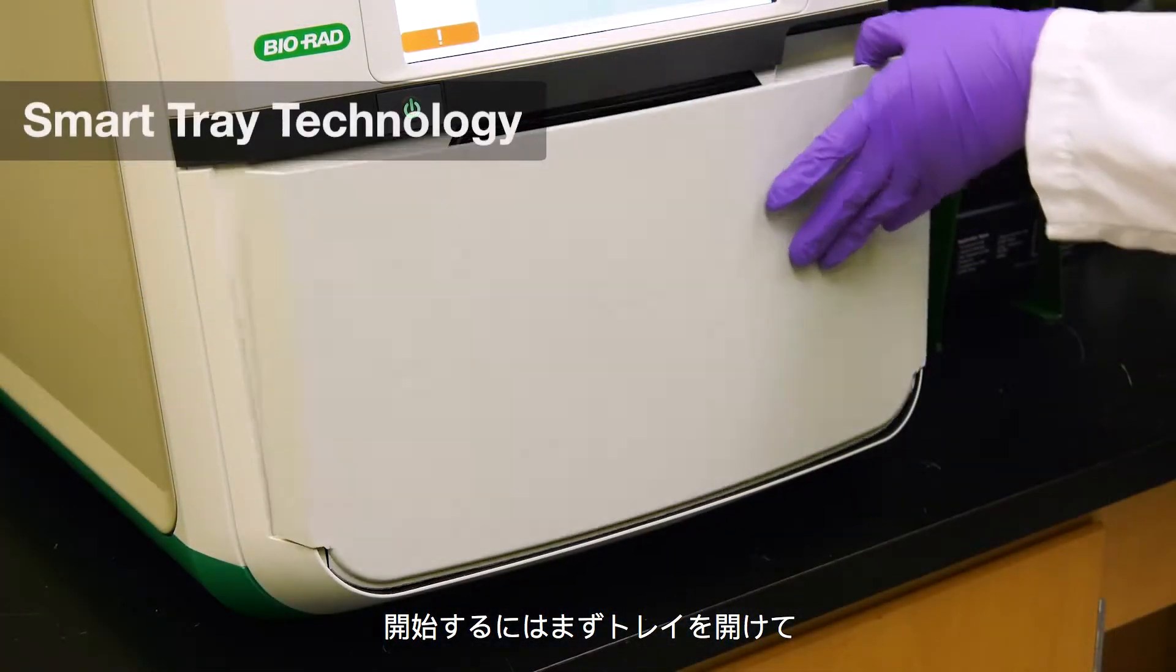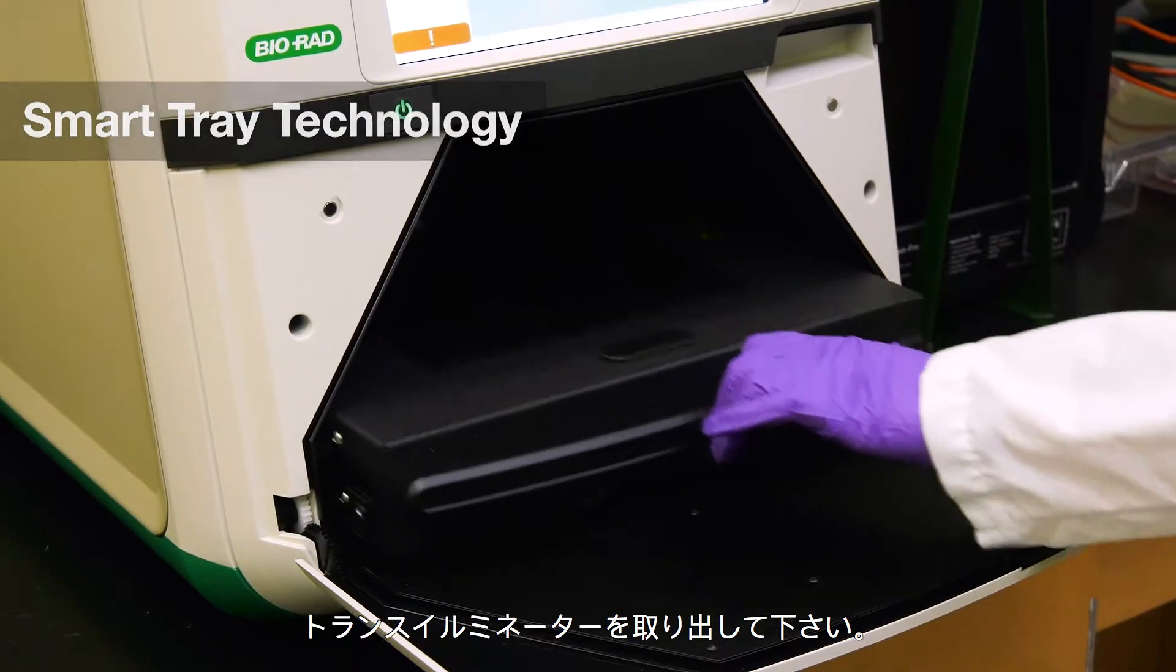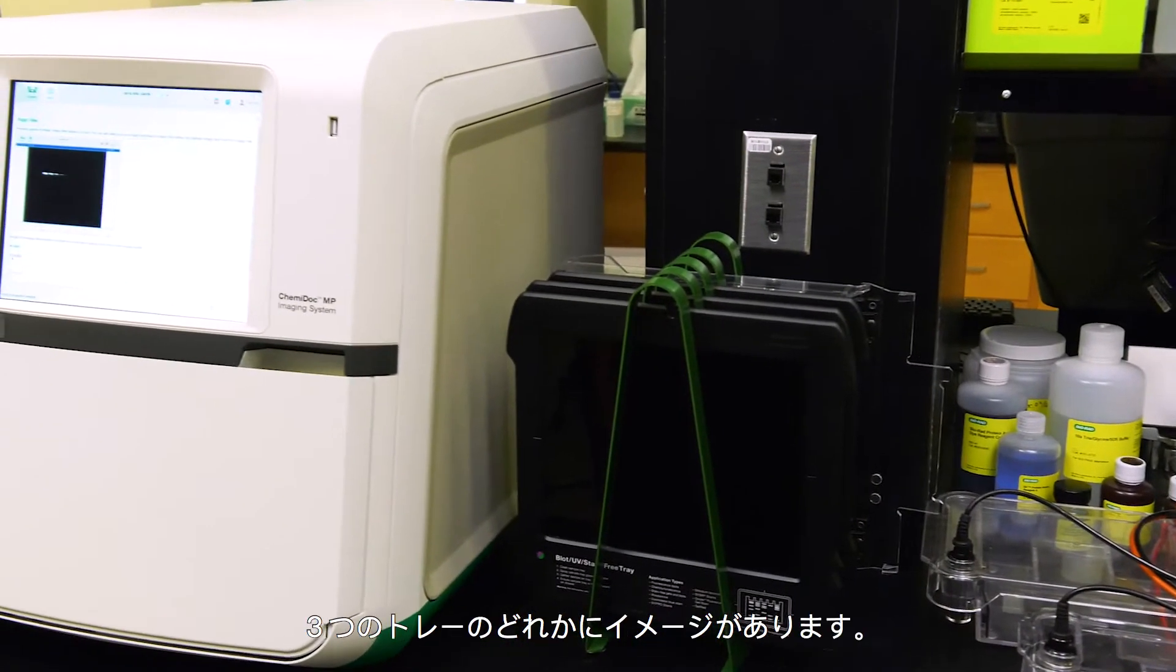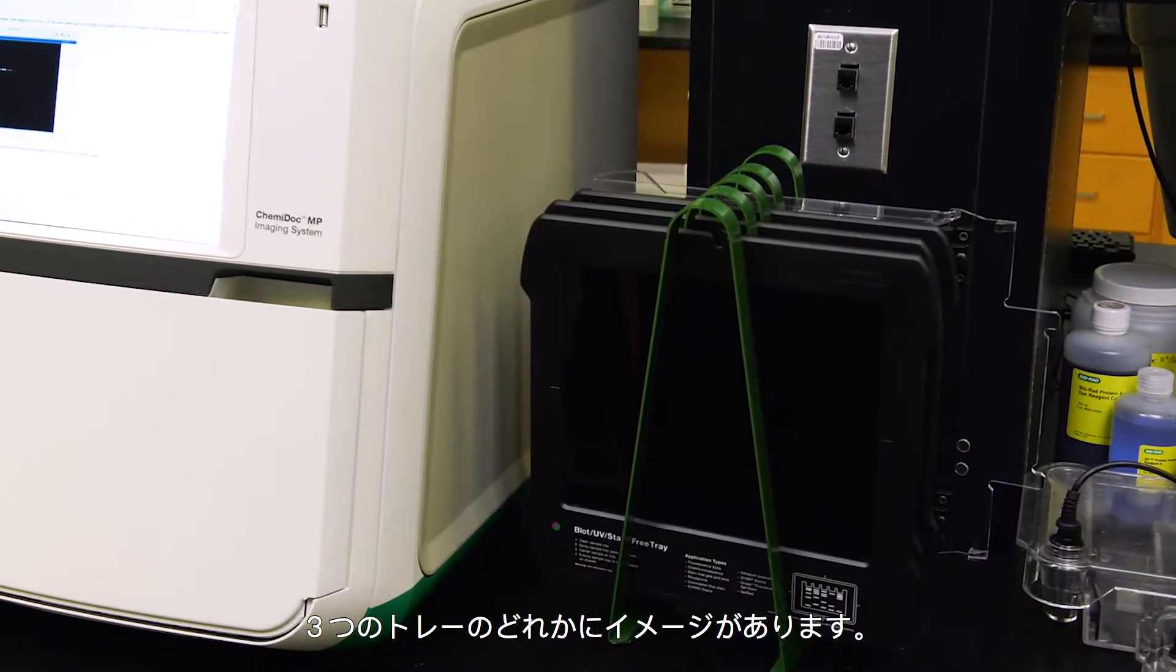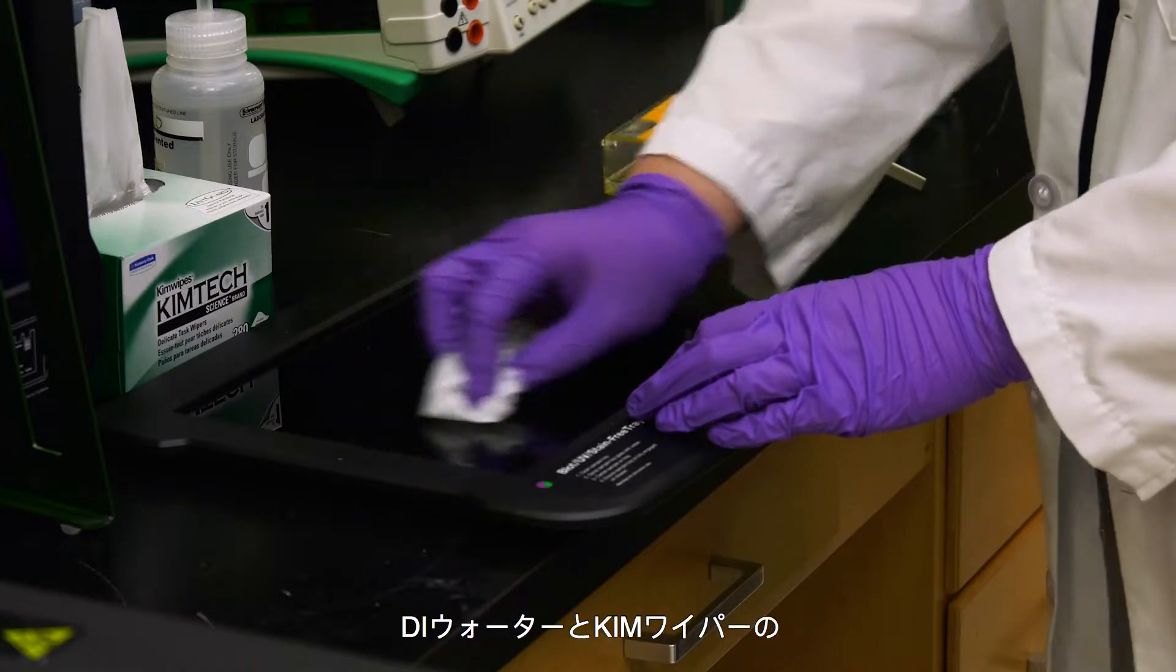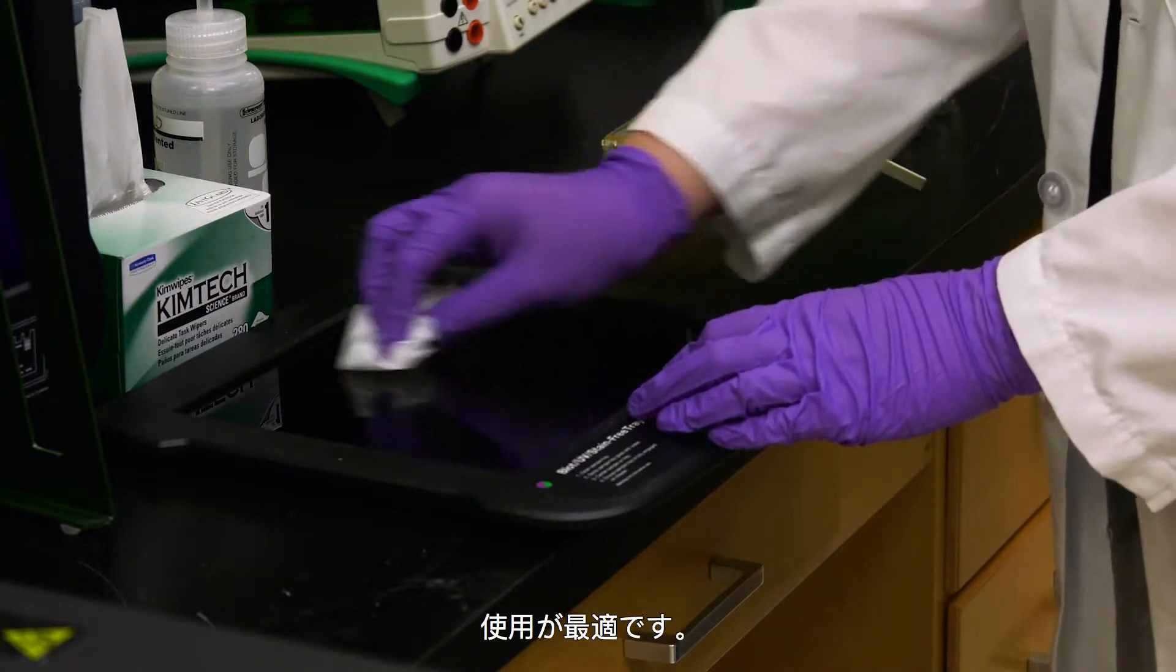To begin, open the imager and pull out the transilluminator. Remember that all gels and blots are always imaged on one of three trays. It is easy but important to clean the trays. Simply use DI water and a Kim wipe for the best performance.